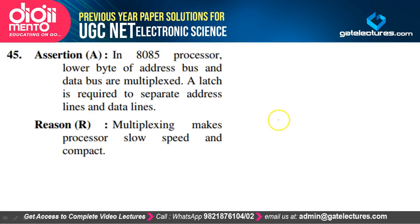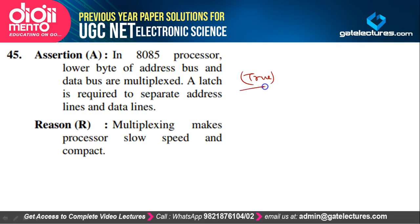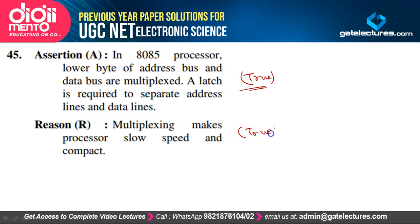In 8085, the lower byte of the address bus and data bus are multiplexed. A latch is required to separate them — true. Multiplexing makes the processor compact but slow — true. However, R is not the correct explanation of A. Option B is correct.